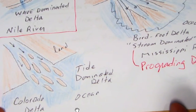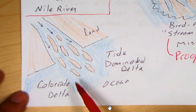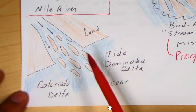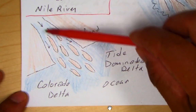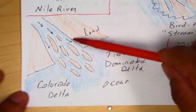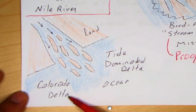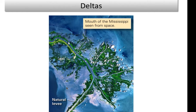The last type is the tide-dominated delta, where you see tide bars because of strong tides that move up the stream valley back and forth. You'll see these tide bars going up into the stream valley with a very wide river mouth. A good example would be the Colorado River delta; the Ganges River in India is also a good example. Here's a picture of the Mississippi River bird foot delta — you can see the stream channel extending out into the Gulf of Mexico.